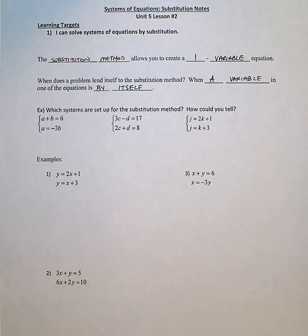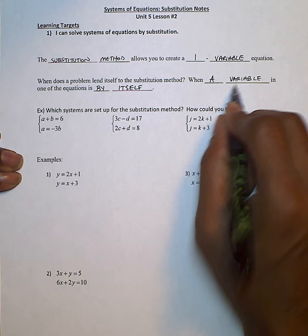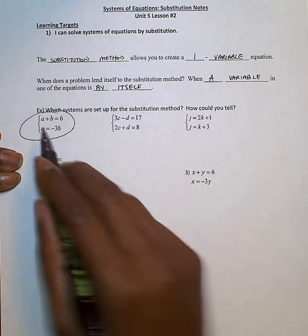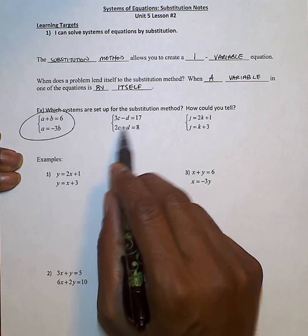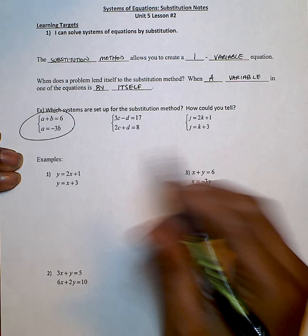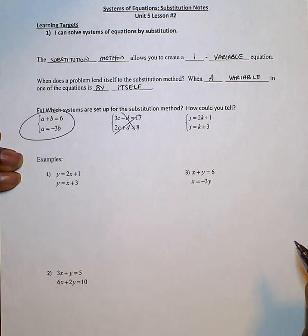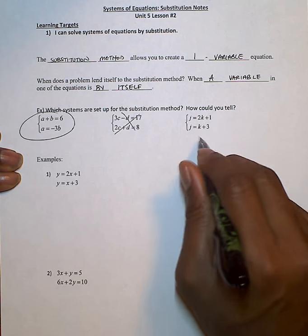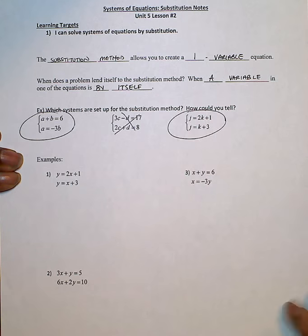Not that that's the only time we can do it, but it's when it lends itself the best. So we're looking at which systems are set up for the substitution method. We said it's when one variable is by itself. That happens in our first system of equations because 'a' is by itself in the second equation. In our second system, none of the variables are by themselves, so it's not set up for substitution very well. In our third one, 'j' is by itself in the top equation and 'j' is by itself in the second equation, so that one is also set up pretty well for substitution.